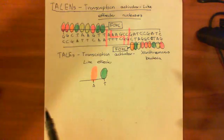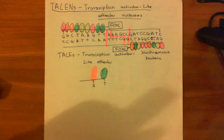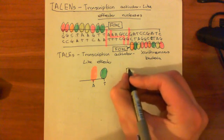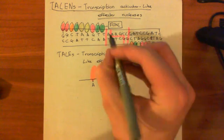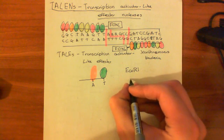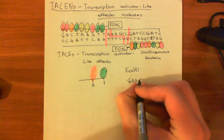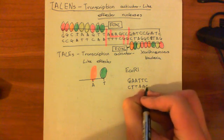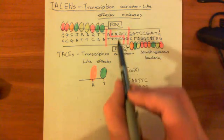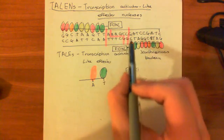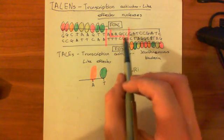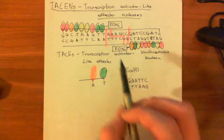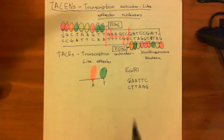What's brilliant about FokI is that it is not sequence-specific in itself. Unlike other restriction endonucleases such as EcoRI, which requires the specific recognition sequence G-A-A-T-T-C, FokI allows you to choose whichever combination of nucleotides you like in the spacer region between the two TALE arrays. That's why we use FokI — all the specificity comes from the TALE portion of the TALEN.